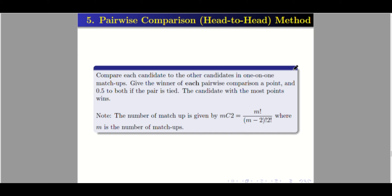The last method is the pairwise comparison or head-to-head method. We compare one candidate to other candidates in 1-versus-1 matchups. Give the winner of each pairwise comparison 1 point, and 0.5 to both if the pair is tied. The candidate with the most points wins. The number of matchups is given by the combination C(M, 2) = M! / ((M−2)! × 2!), where M is the number of candidates.